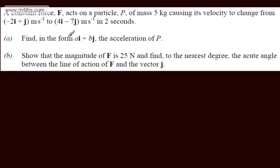In part A, we need to find in the form ai plus bj the acceleration of P. We can use the constant acceleration or SUVAT equations for this part. So writing it out, we're going to have S, U, V...